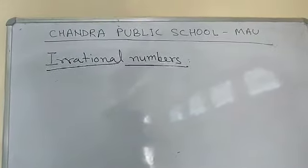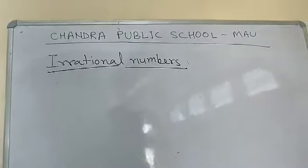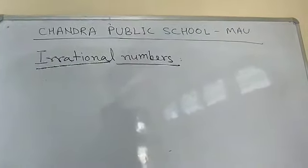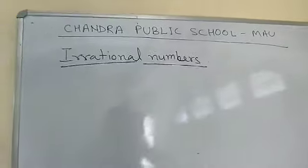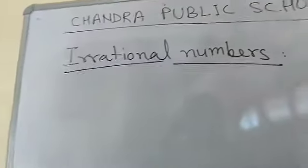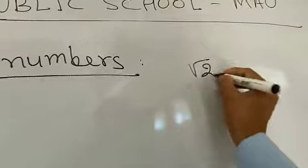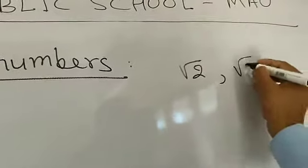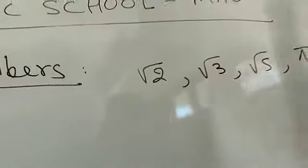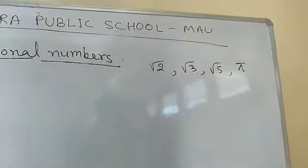A number that cannot be represented in the form of P by Q is called an irrational number. For example, root 2, root 3, root 5, and pi — these are irrational numbers.